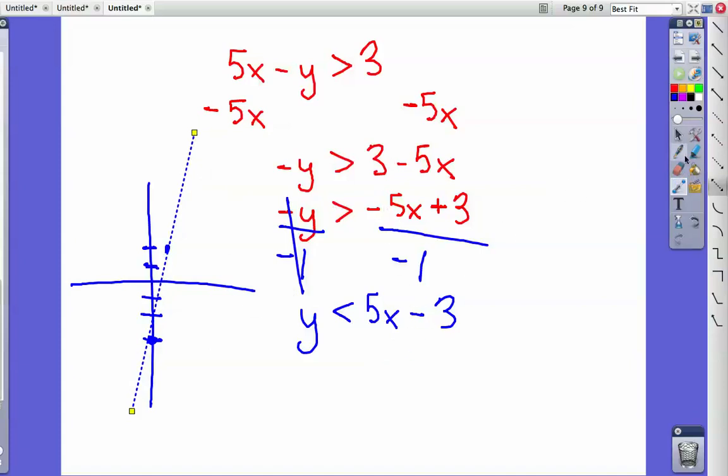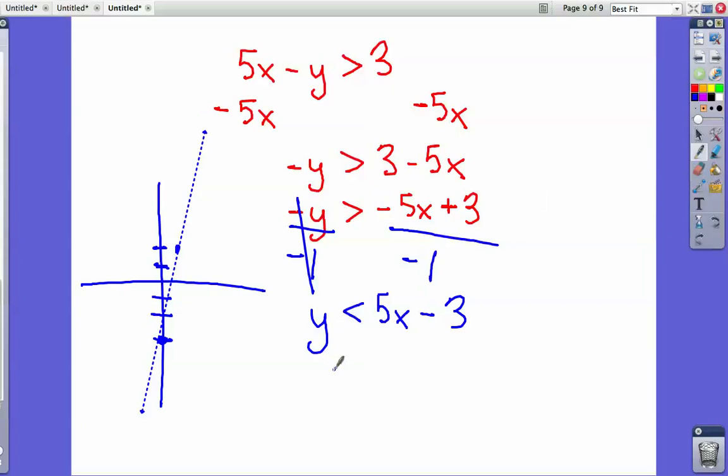And then we have to put in 0 for x and 0 for y. Here we have 0 for y, it's going to be less than 5, and we put in 0 for x as well, and we're going to subtract it from 3.